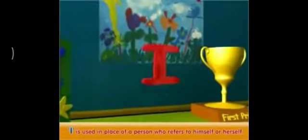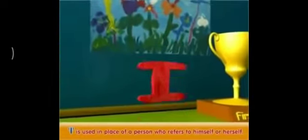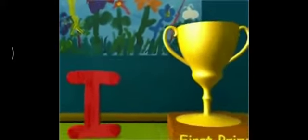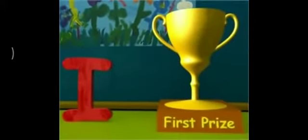I is used in place of a person who refers to himself or herself. In the example: this drawing is mine. I got the first prize for it. I is used in place of the person who is referring to himself.